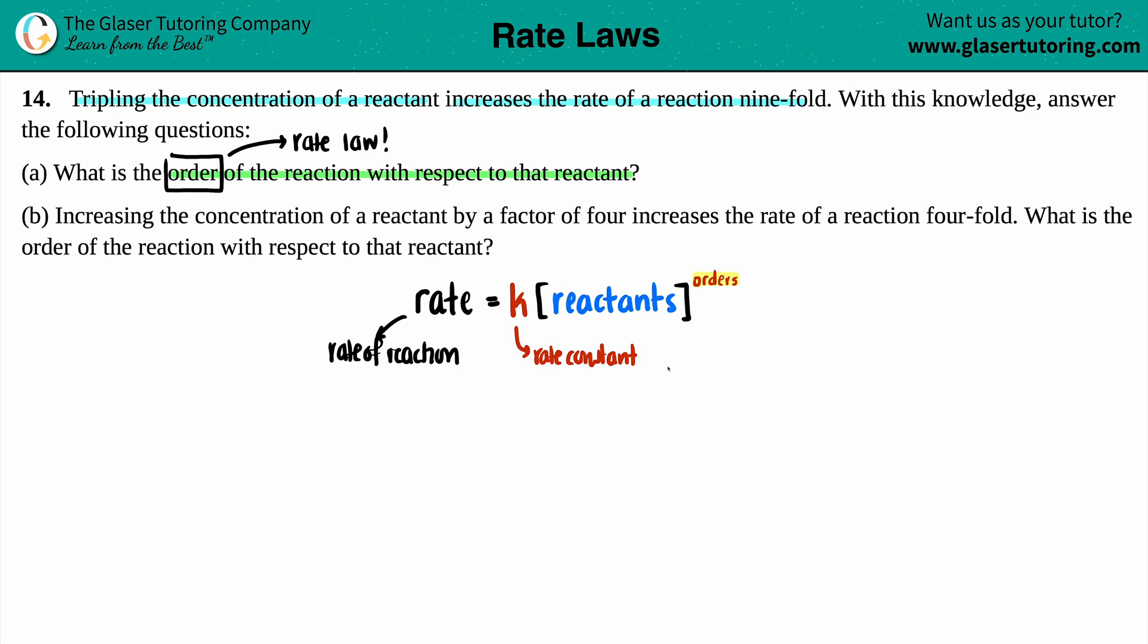The only thing they told us was that if you triple the concentration of a reactant, it will increase the rate by ninefold. So from this information, for letter A: we are tripling the actual reactant, and because of that, that will increase the rate by ninefold.